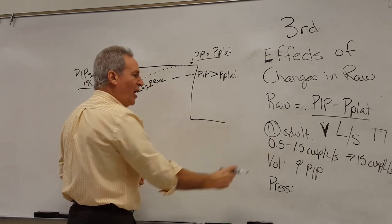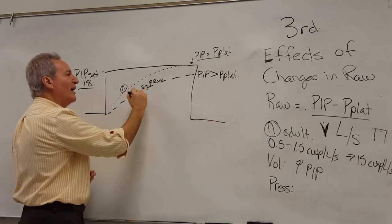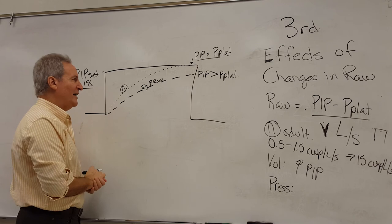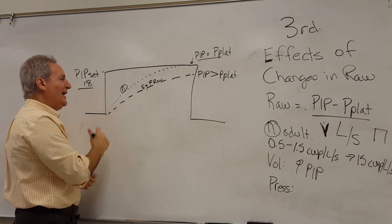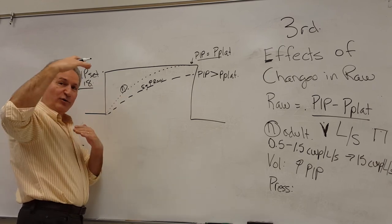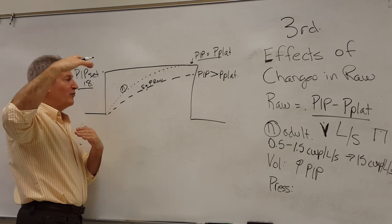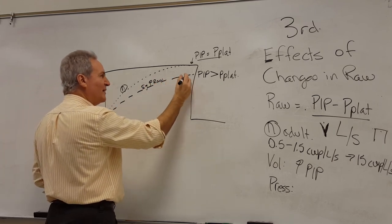But what happens when our RAW goes up significantly? I'm describing only the significant rise in RAW, and that's given here by this dashed line. You can see that alveolar pressure is rising more slowly because for the same pressure gradient, there's more resistance to flow through the tubes. The result is we don't get as much volume moving into the lung as fast.